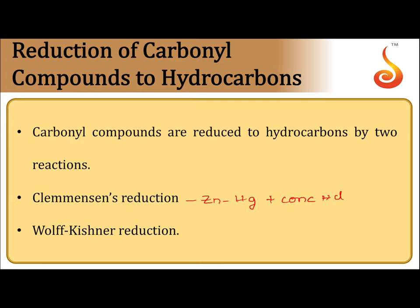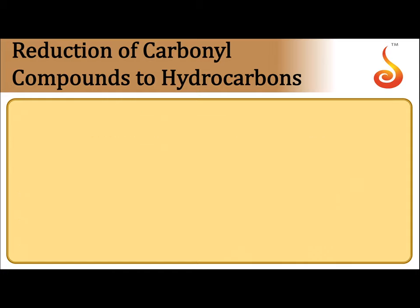In Wolff-Kishner reduction, the aldehyde or ketone is heated with hydrazine and potassium hydroxide in a high boiling solvent such as glycol. In both Wolff-Kishner and Clemmensen's reductions, the carbonyl group in aldehyde and ketone is reduced to a methylene group.